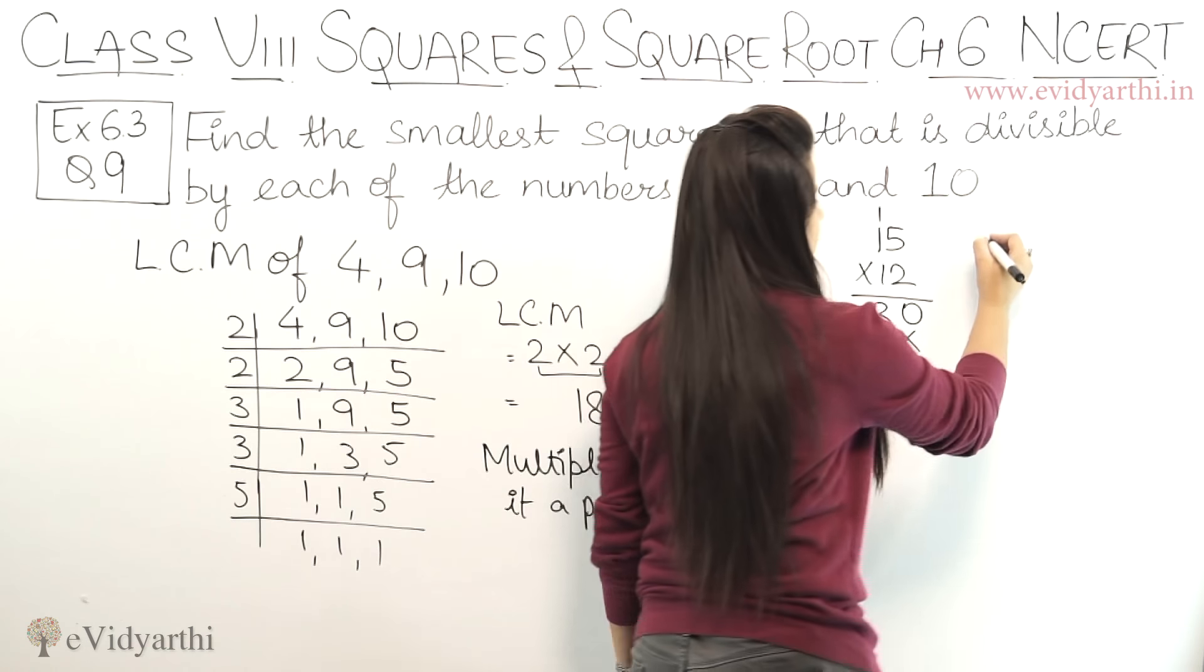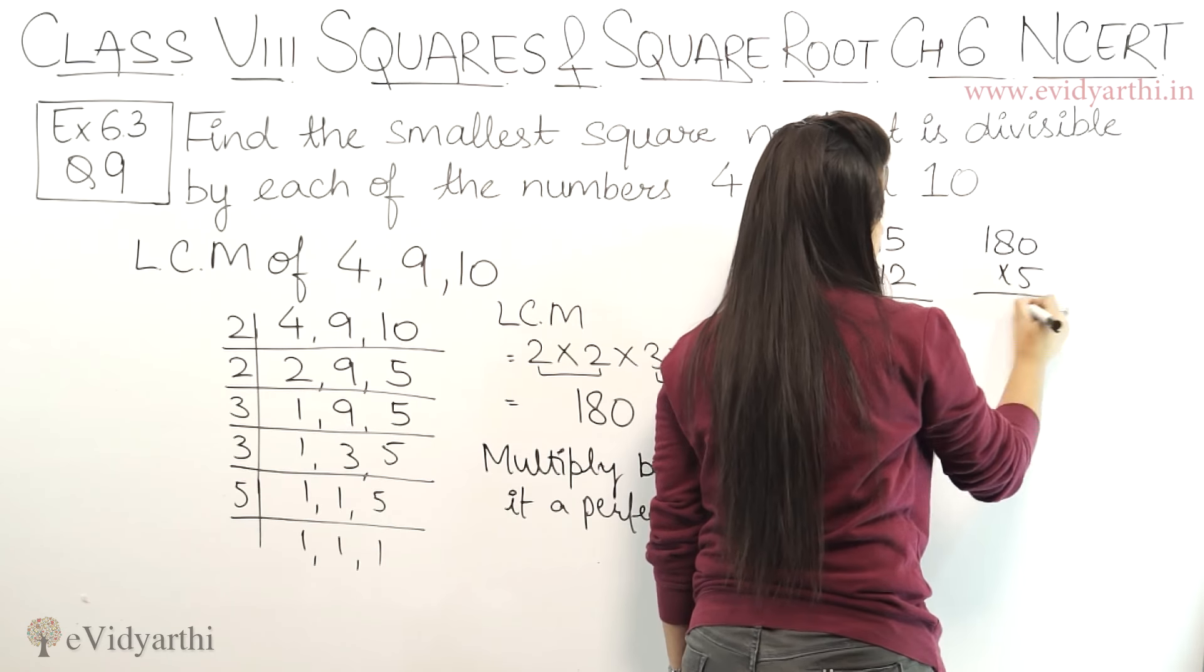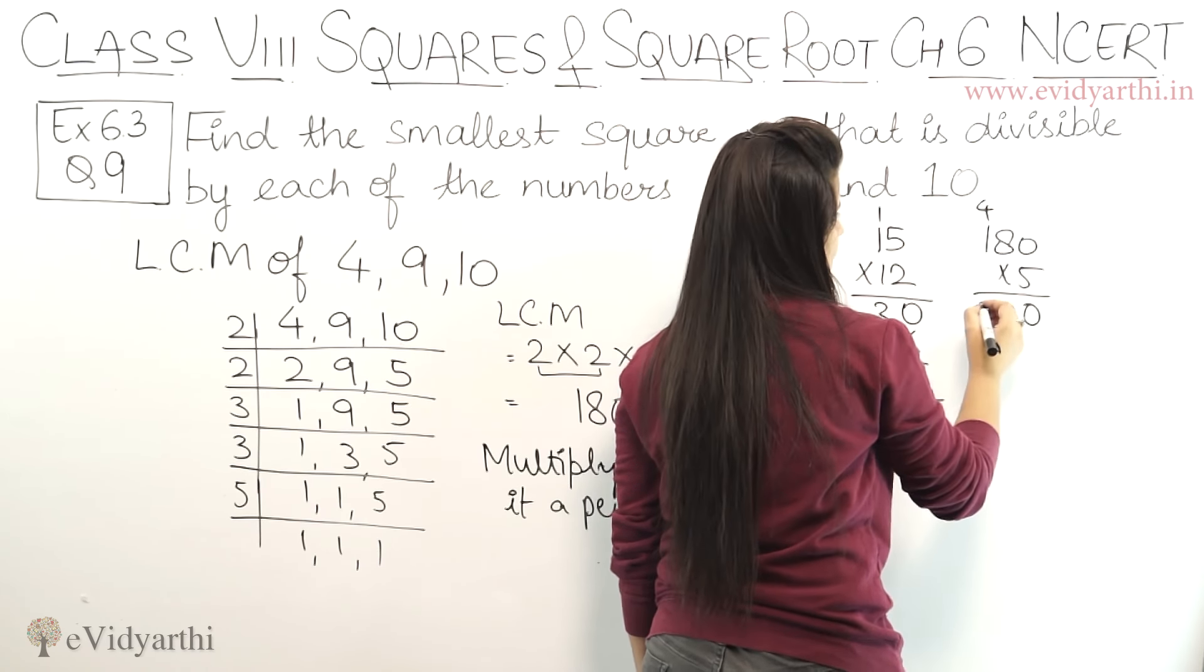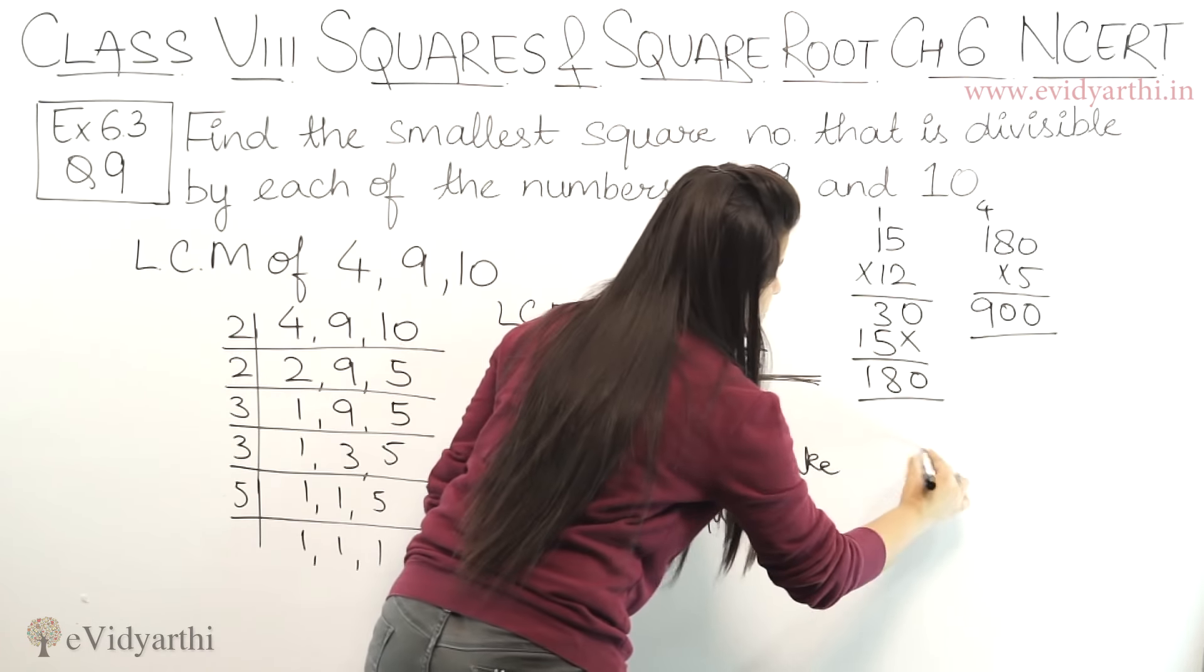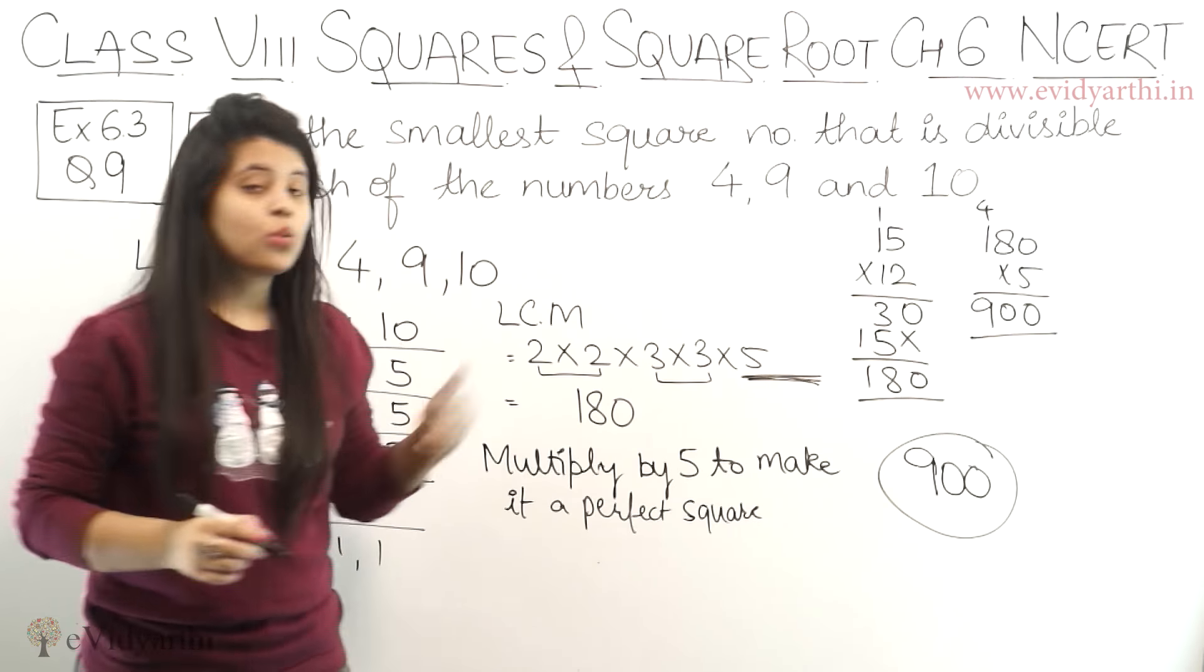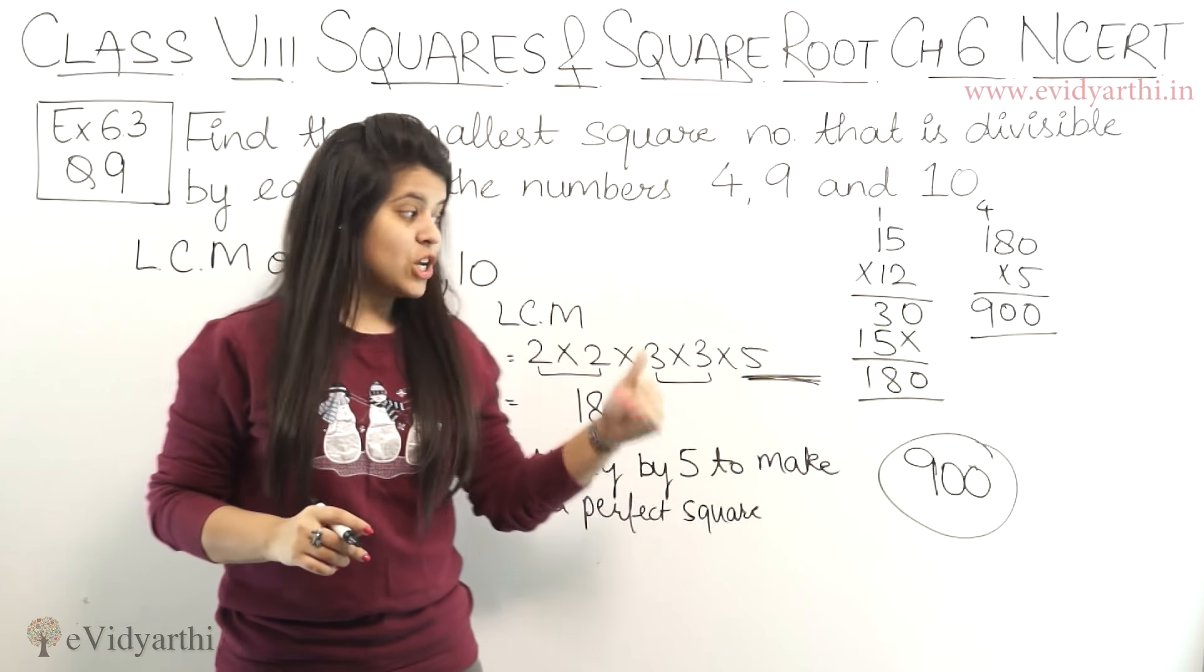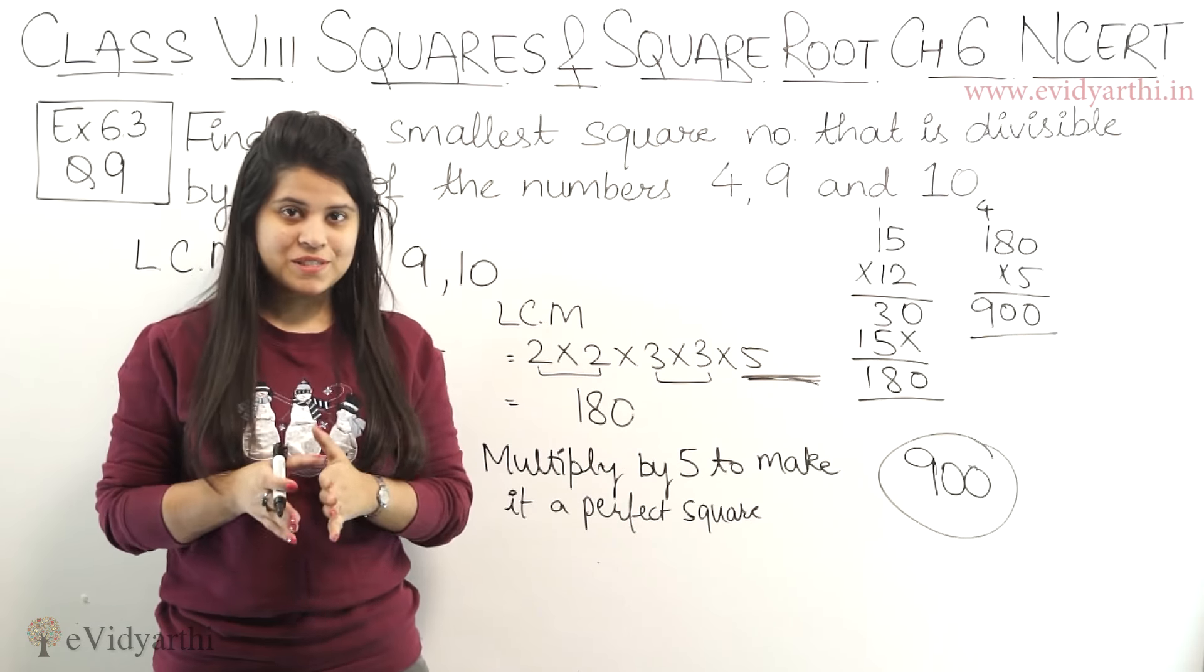So multiply by 5 to make it a perfect square. So we have to multiply it by 5. We will get 5 0s are 0, 5 8s are 40, then 5 1s are 5 plus 4, 9. So we have 900. This means 900 is the number which is a square number and which is divisible by 4, 9, 10. So this is the smallest square number that is divisible by these 3 numbers.